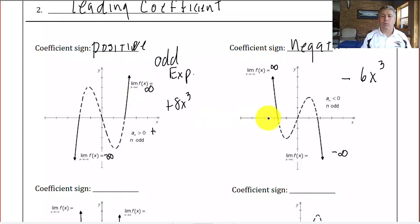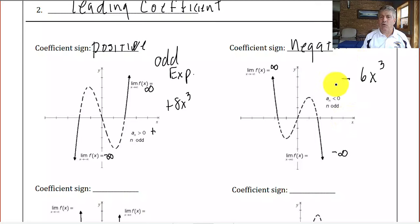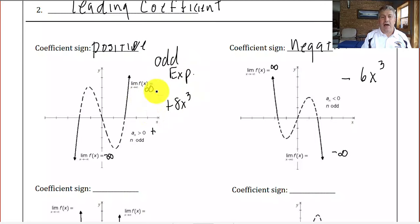The end behavior will be in opposite directions for odd exponents. When the leading coefficient is positive and we have an odd exponent, as x goes to positive infinity, y goes to positive infinity. And if that leading coefficient is negative, as x goes to positive infinity, y goes to negative infinity. So opposite directions for odd exponents — positive sign means y goes to positive infinity, negative sign means y goes to negative infinity.